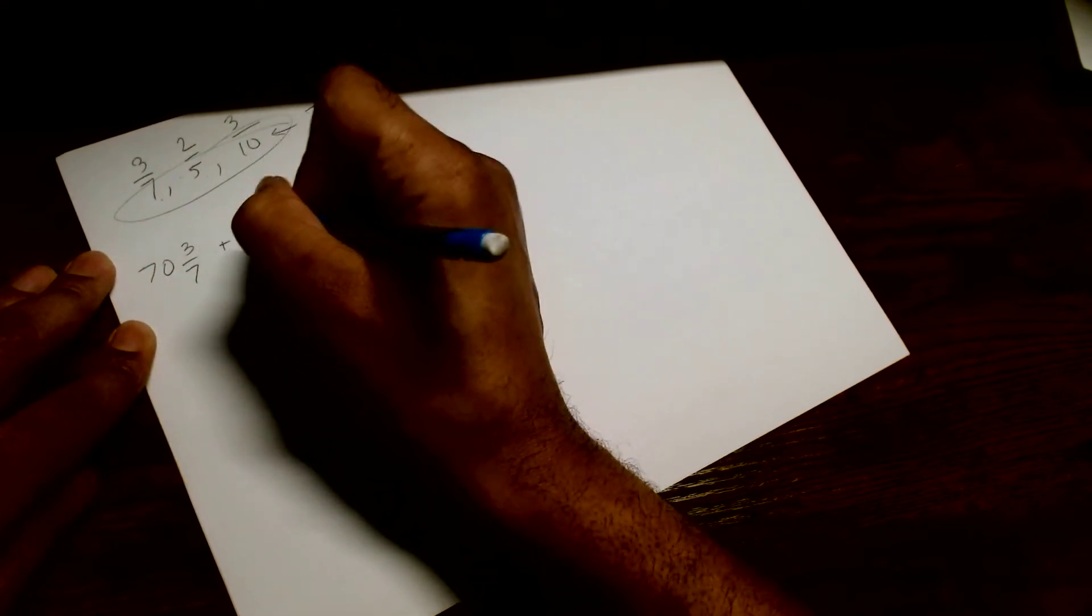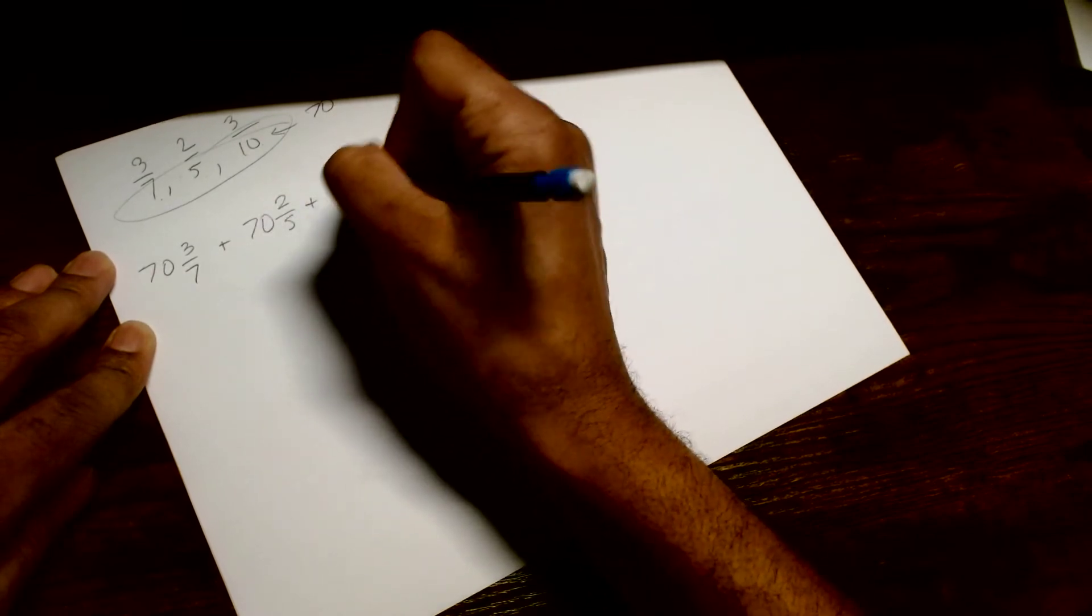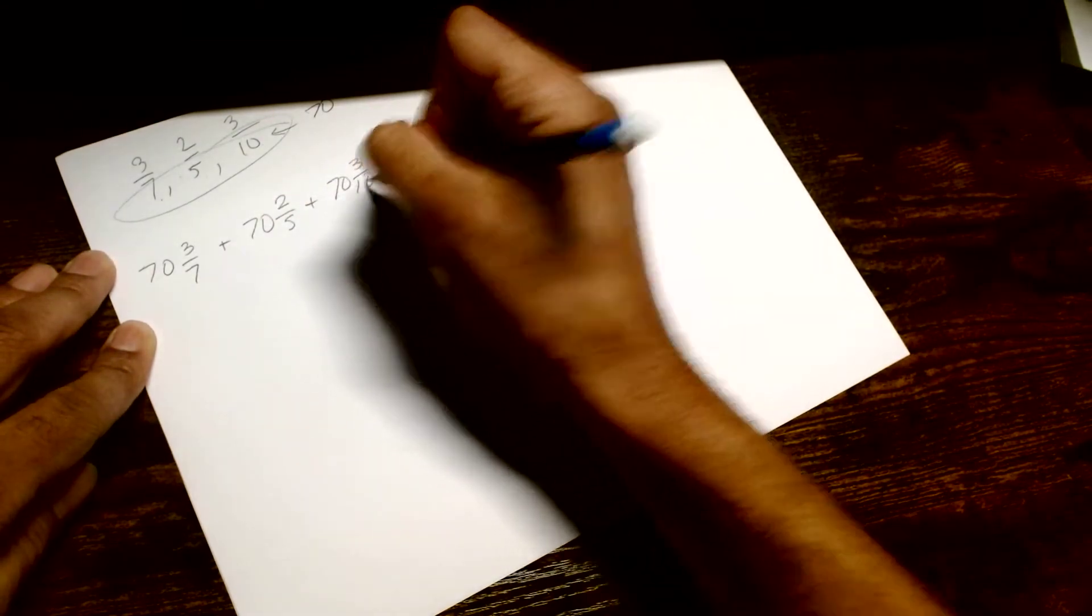Three sevenths. Plus 70. Two fifths. Plus 70. Three tenths.